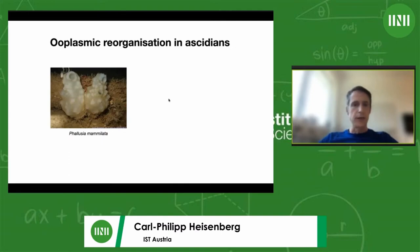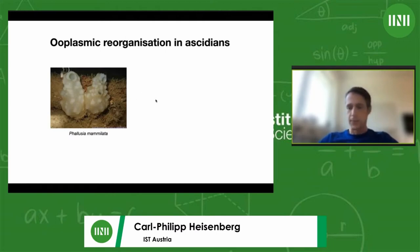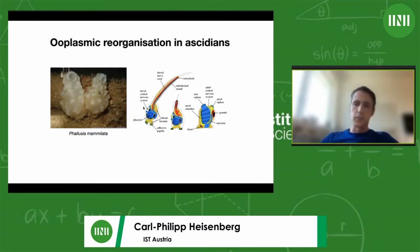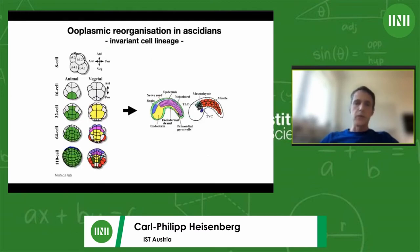Some of you may not know ascidians — they are shown here in this picture. They are in fact the most closely related invertebrate species to humans, which is perhaps not entirely obvious from this picture. If you look at an earlier stage of development, the larvae of ascidian species look quite similar to tadpoles in Xenopus, and not completely dissimilar to human embryos. So studying ascidians is worthwhile.